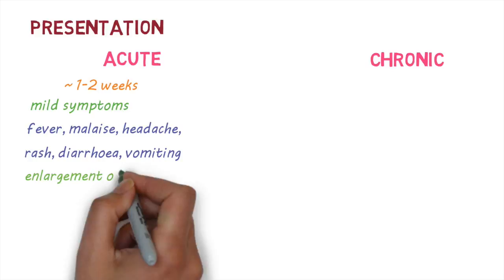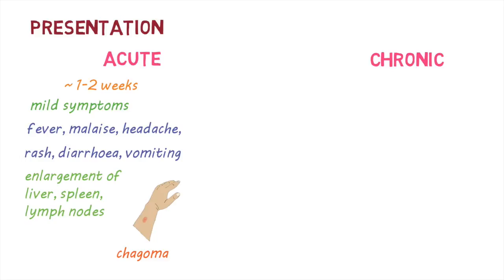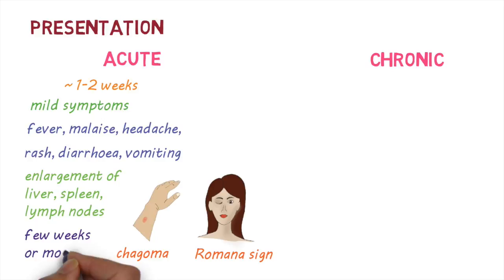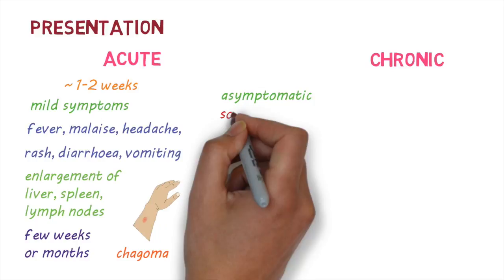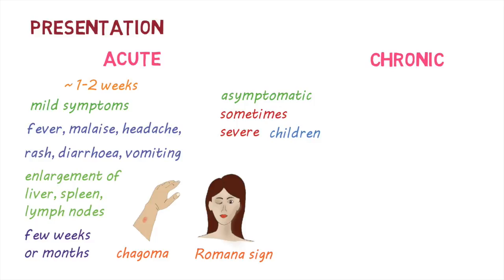There could be enlargement of the liver, spleen, or lymph nodes. Sometimes there can be a skin nodule called a chagoma, or a swelling around the eyelid called Romaña's sign at the site of the insect bite. The symptoms generally last for a few weeks or months. Some people may not have any symptoms. Very rarely, the disease could be severe in the acute phase, which is more common in children or those who are immunosuppressed.